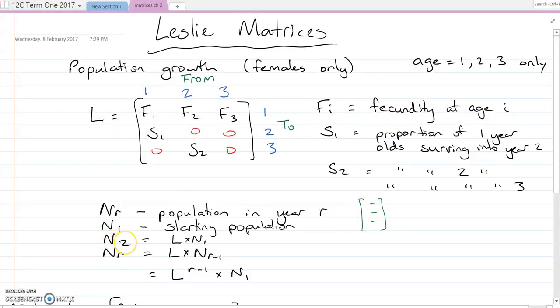So that would give us N2, which is the number in the second year. If N1 is the starting year, to get subsequent years all we do is repeatedly times by this matrix L in the front. So when we get to a higher one, we're actually multiplying, we're multiplying r minus one of this L matrix.